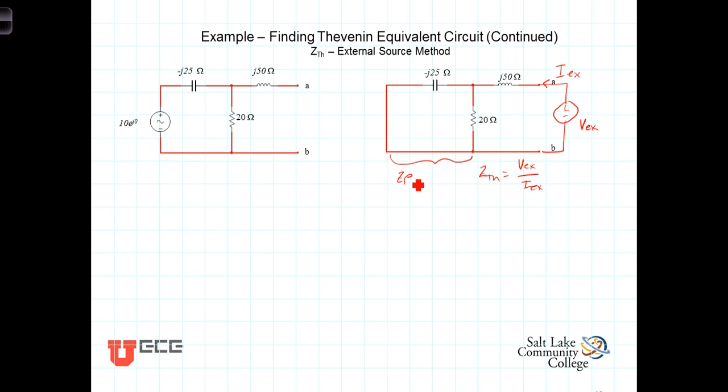Let's call that Z parallel. By reducing those to a parallel combination, we'll have these two, the parallel equivalent, in series with that. We'll then be able to write the expression for the external current will just be equal to this external voltage divided by the series combination of those two, plus the parallel equivalent.